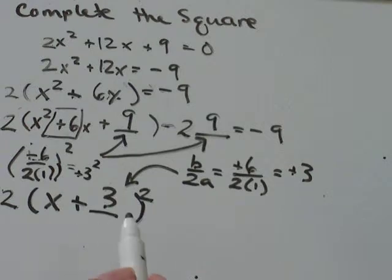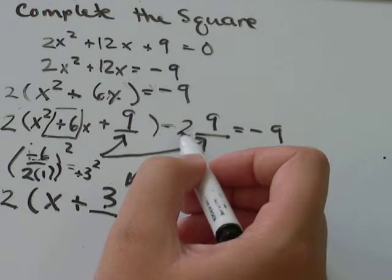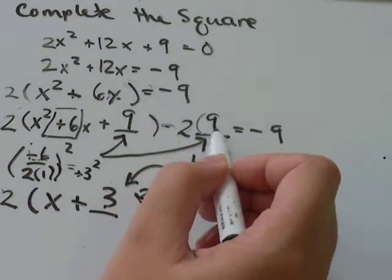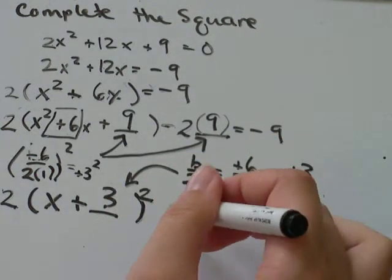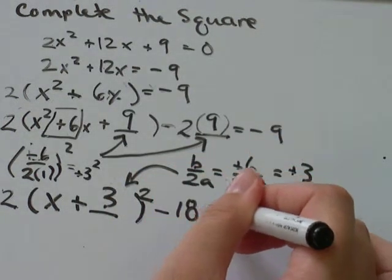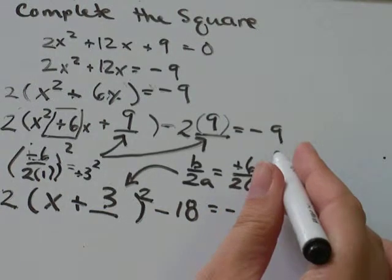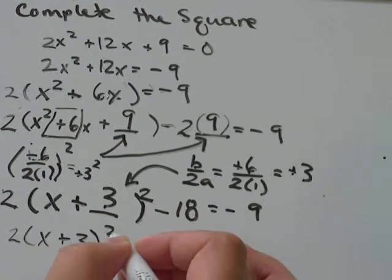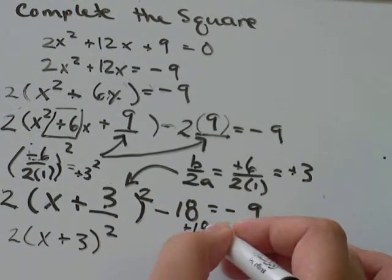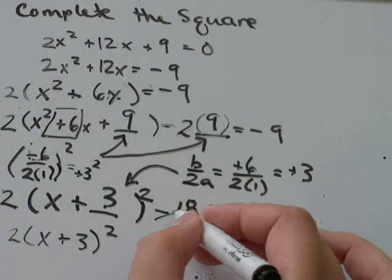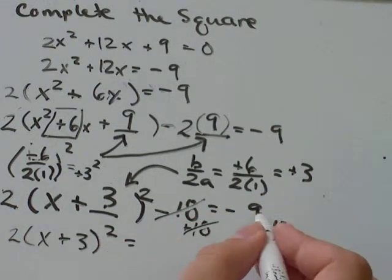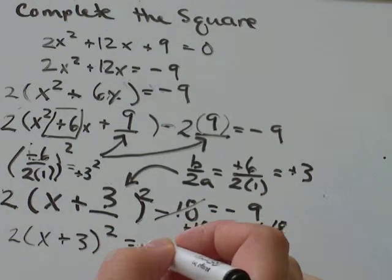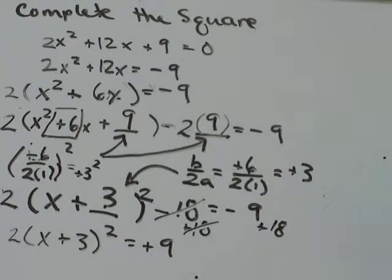All we need to do is simplify the rest of the numbers we've got. So back up here, I had negative 2 times 9. And that's going to be equal to negative 18. And then I had negative 9 on the other side. This is going to stay the same for now. And I'm just going to add 18 to both sides so that they'll go away. Negative 9 plus 18 is going to end up being positive 9.